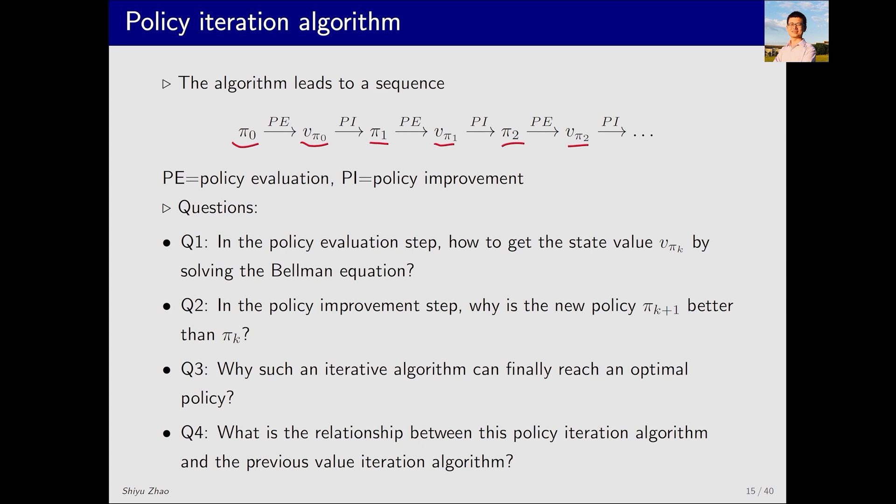Let's think about some fundamental questions first. There are four questions in total. Question 1: In the policy evaluation step, how to get the state value? Question 2: In the policy improvement step, why is the new policy πk+1 better than πk? Question 3: Why such an iterative algorithm can finally reach an optimal policy? Question 4: What's the relationship between this policy evaluation algorithm and the previous value iteration algorithm?